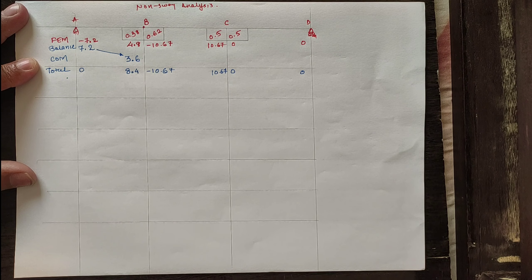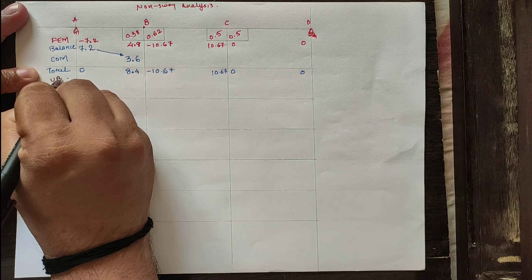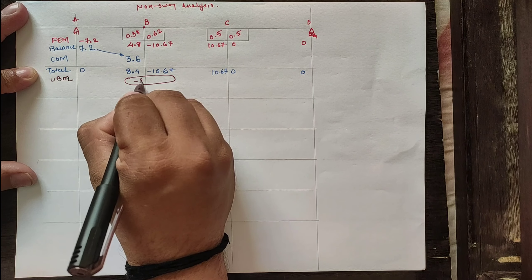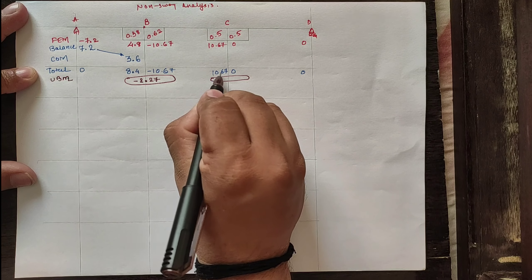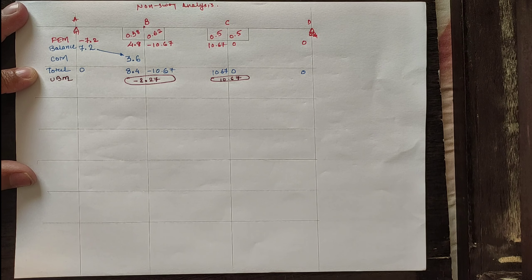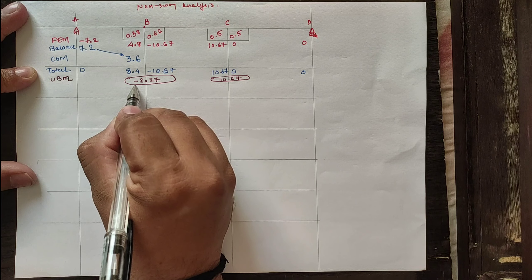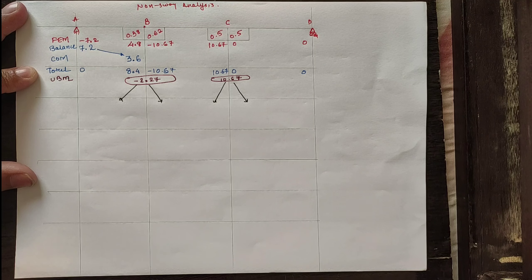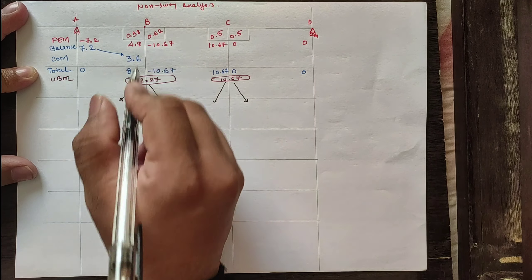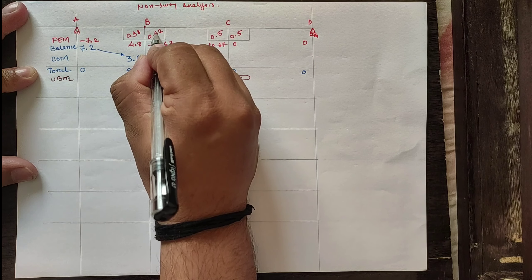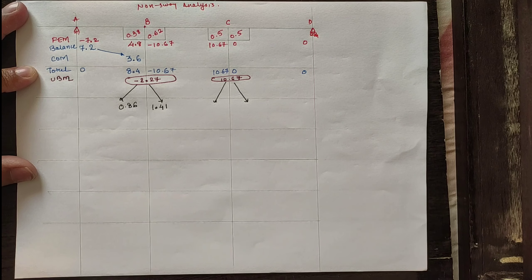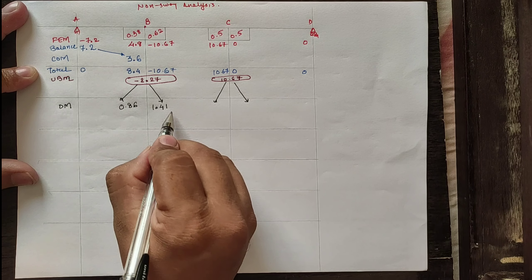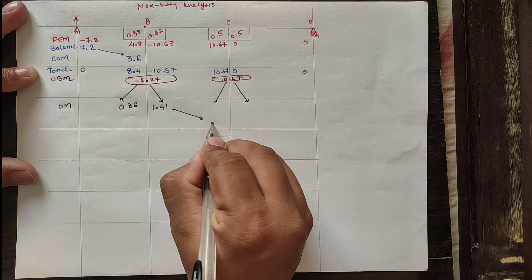Now we have to distribute this total moment according to the distribution factor. First, unbalanced moment per joint B is 8.4 minus 10.67 = minus 2.27, and at joint C the value is 10.67 minus 0 = 10.67. According to the rule, if the unbalanced moment is negative, we distribute the positive value; for positive unbalanced moment, we go for negative distribution. So 2.27 × 0.38 = 0.86, and 2.27 × 0.62 = 1.41. As the far end is hinged, no carryover is needed there, but at the intermediate span the carryover moment is one-half of 1.41 = 0.71.